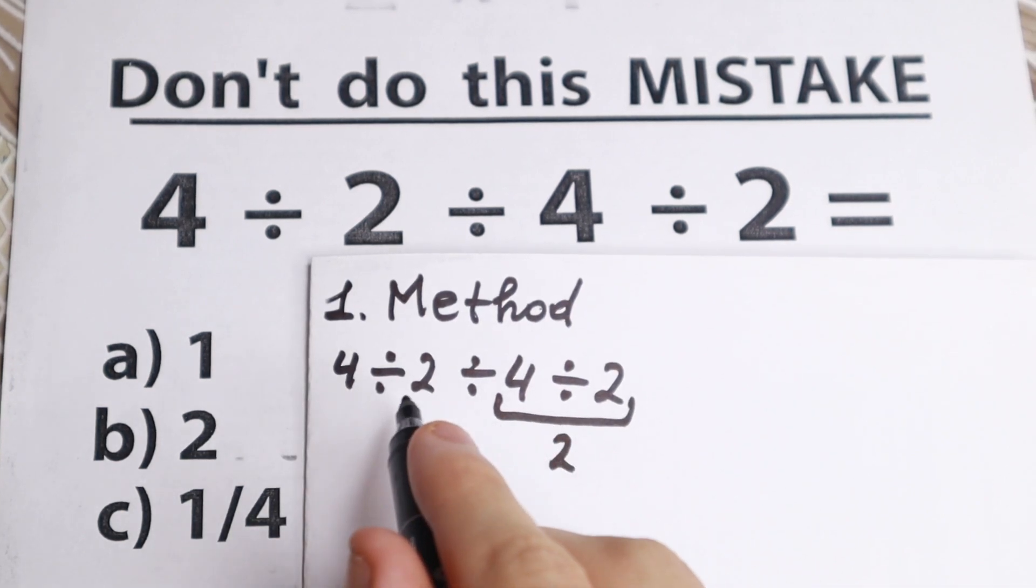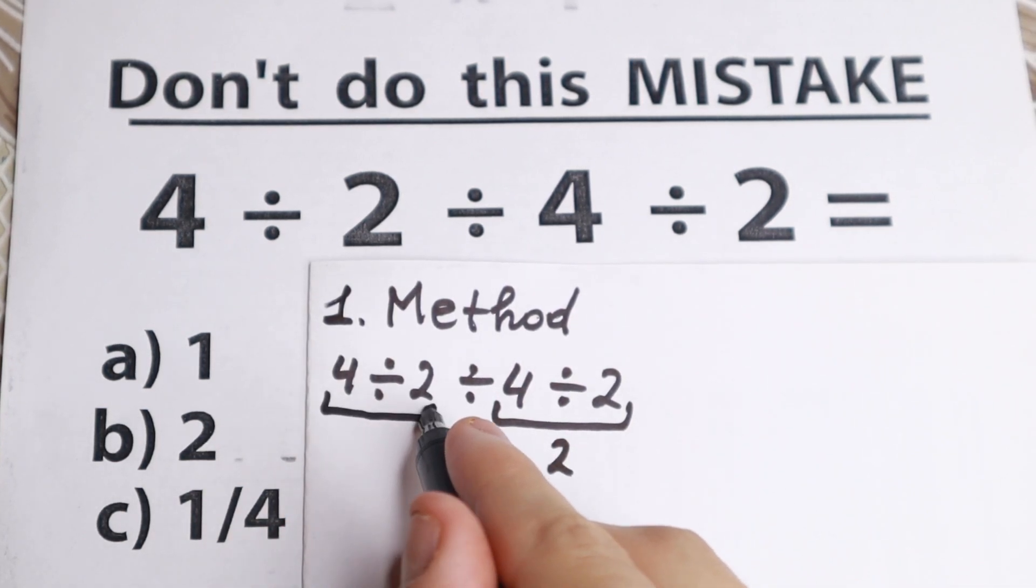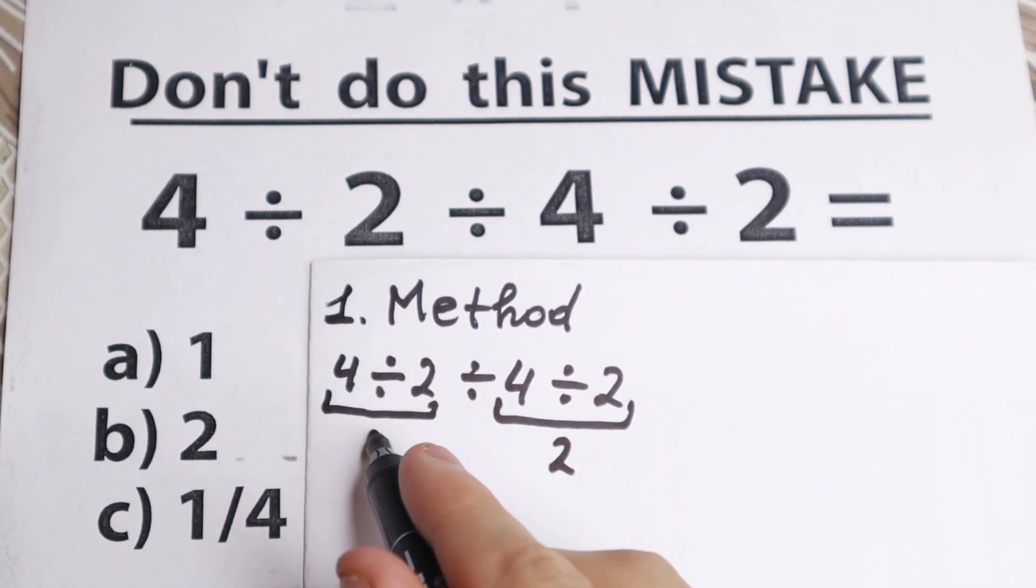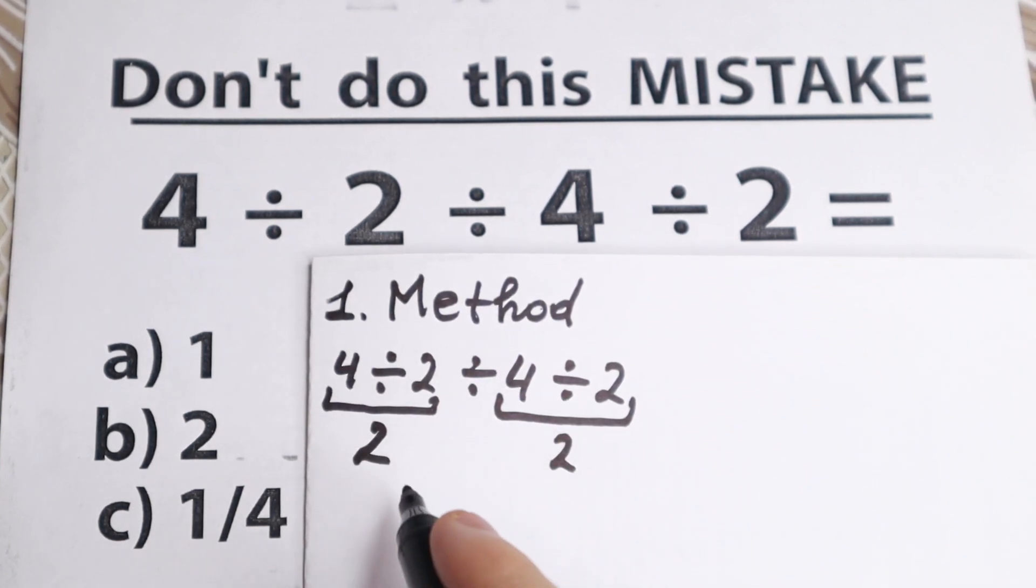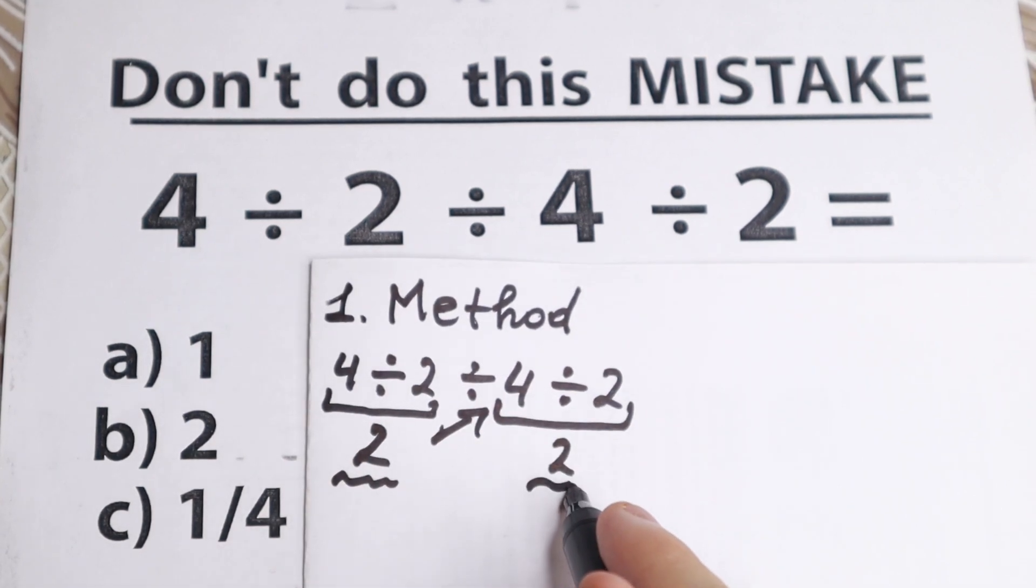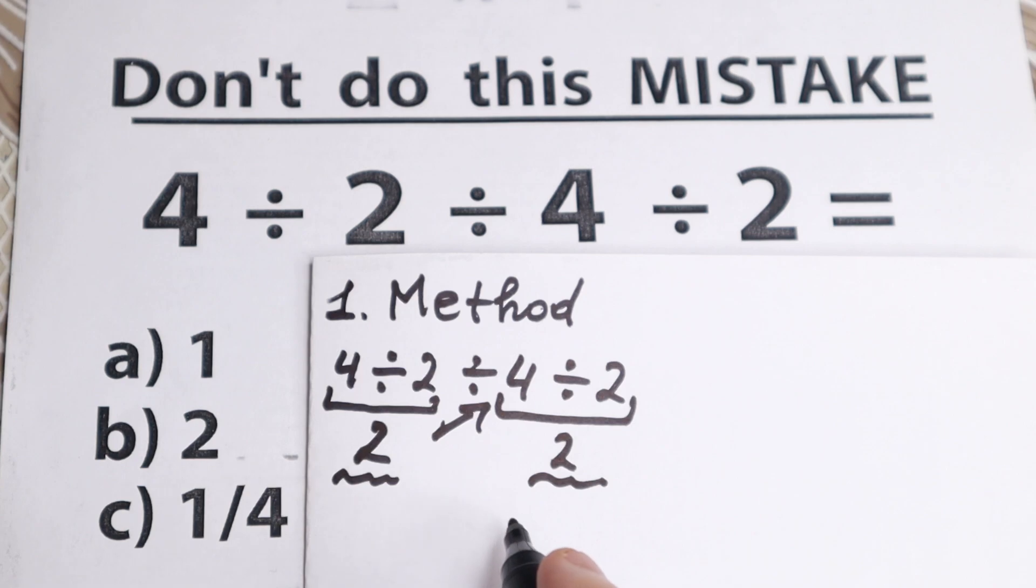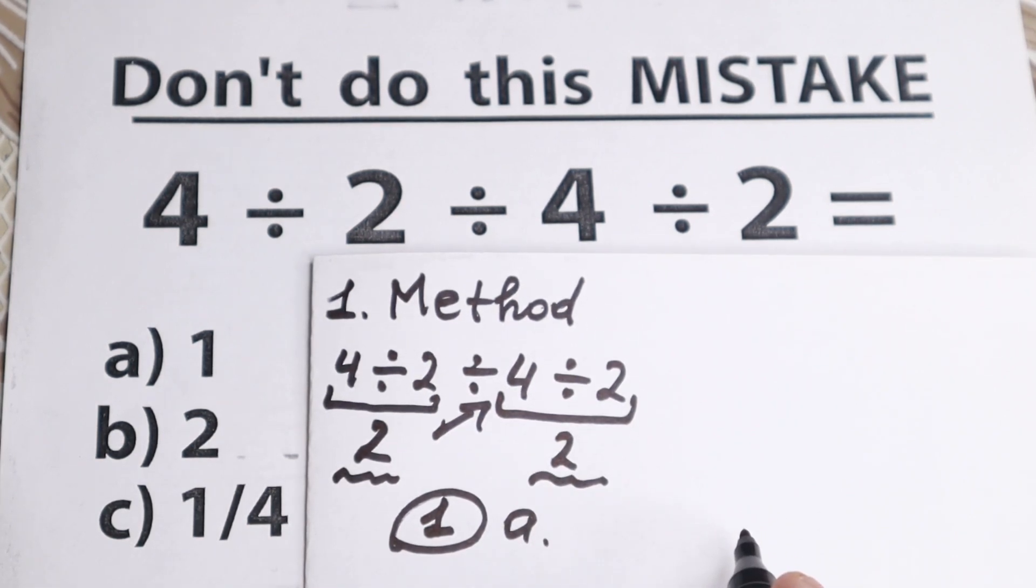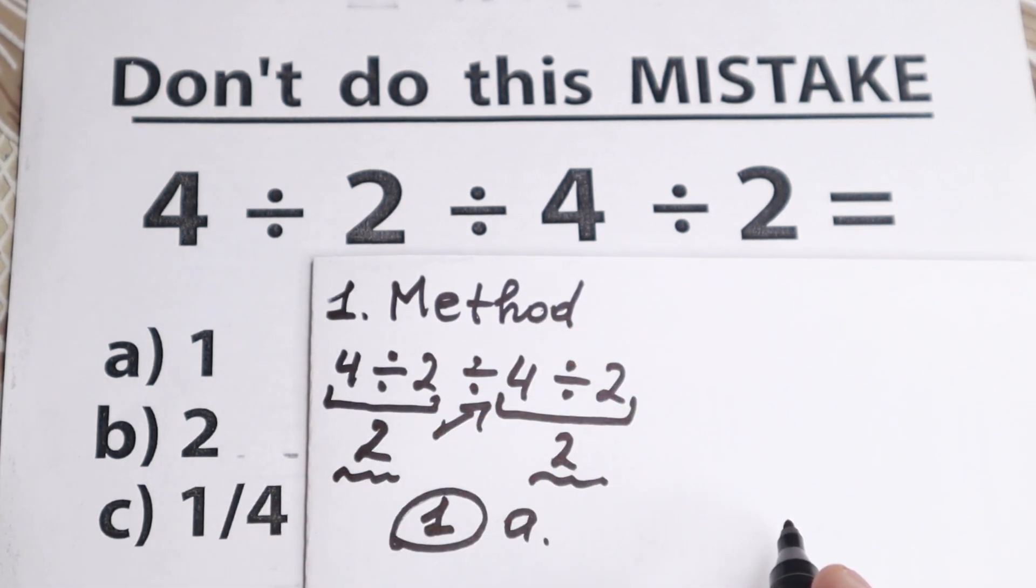And they can do the same thing with this one, so 4 divided by 2, equal to 2. And we still have 2 divided by 2. If we divide 2 divided by 2, we will have 1. Because 2 divided by 2 is 1, and option A, they think that this is absolutely correct, and they finished with this problem.